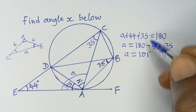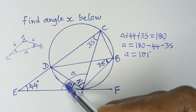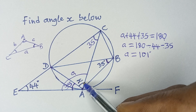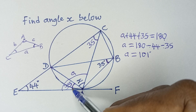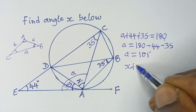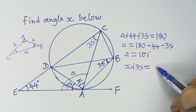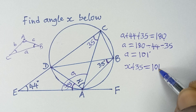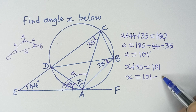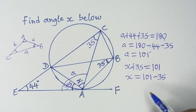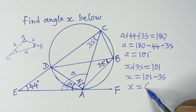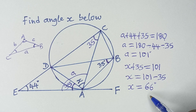A = 180 − 44 = 136, then 136 − 35 = 101°. This full angle A of 101° is made up of angle x and angle 35°. So x + 35 = 101, which gives x = 101 − 35 = 66°. That's the value of x.